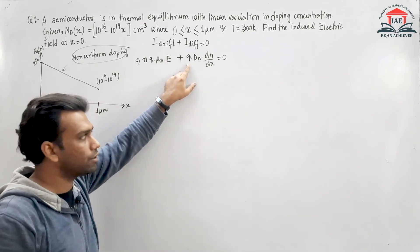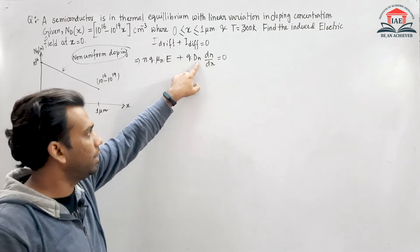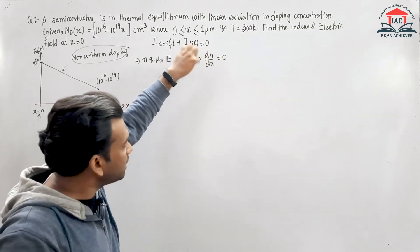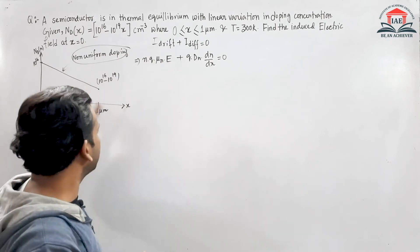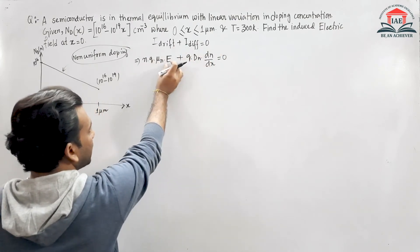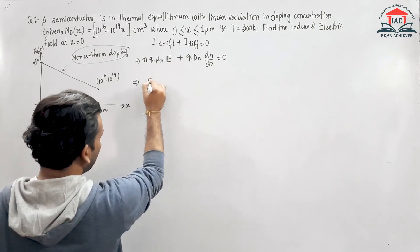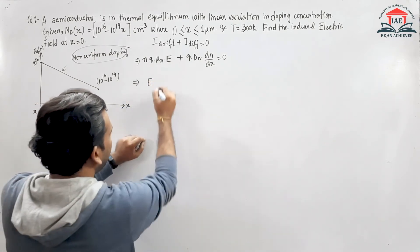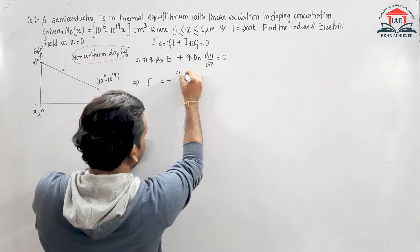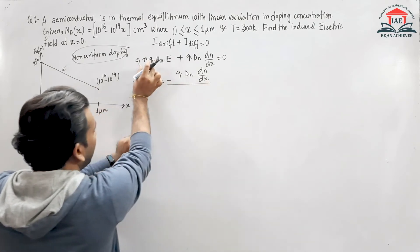Q is the electronic charge, Dn is the diffusion coefficient, and dn/dx is the concentration gradient. From the equation I_drift + I_diffusion = 0, we can find the value of E. Capital E can be written as: E = -Q * Dn * (dn/dx) / (N * Q * mu_n).